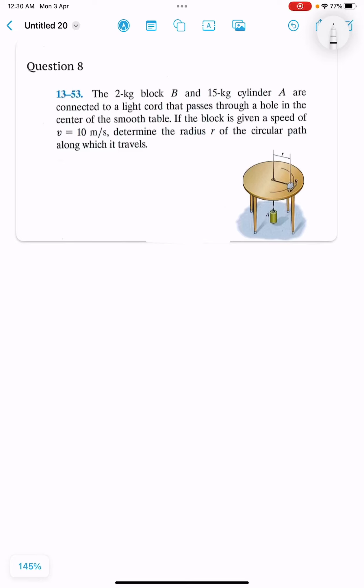Hello, I have question 8. It is about Newton's law. The 2 kilogram block B and 15 kilogram cylinder A are connected to a light cord that passes through a hole in the center of the smooth table. If the block is given a speed of v equal 10 meters per second, determine the radius of the circular path along which it travels.